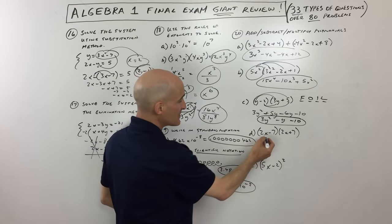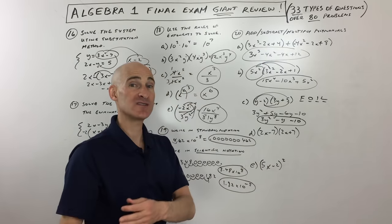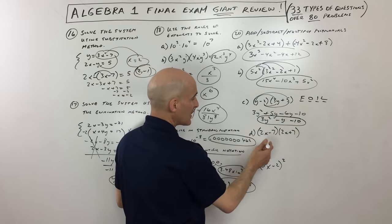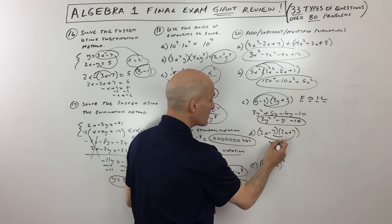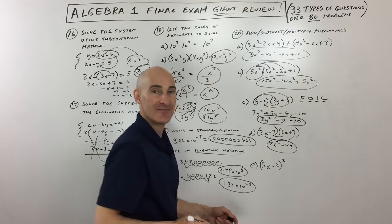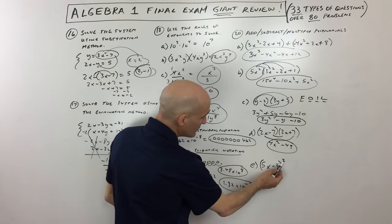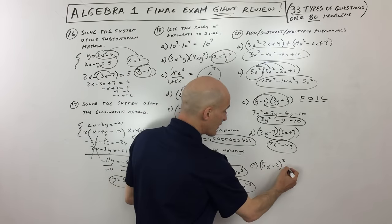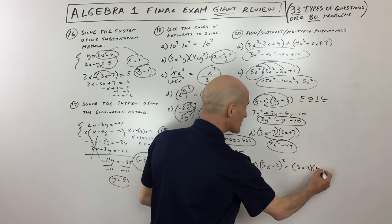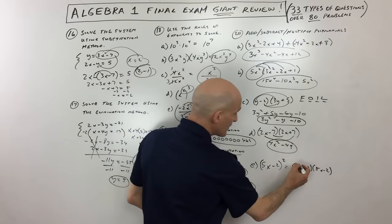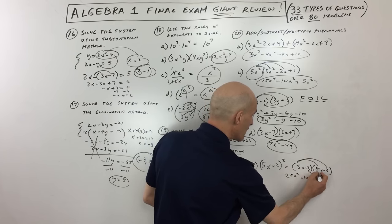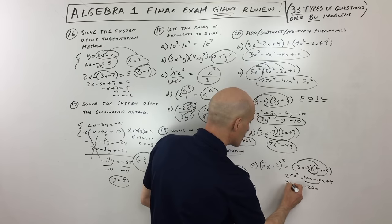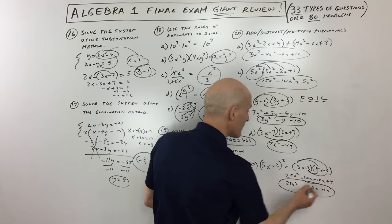When one binomial is a sum and the other is a difference of the same terms, the middle terms cancel — you only get the first squared minus the last squared: 4x squared minus 49. For a binomial squared, write it as two identical factors and FOIL: 5x minus 2 times 5x minus 2 gives 25x squared minus 10x minus 10x plus 4, which simplifies to 25x squared minus 20x plus 4.